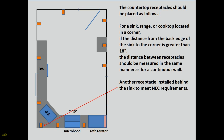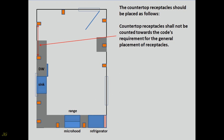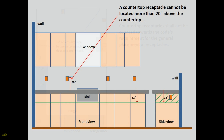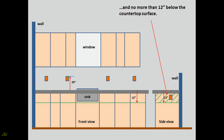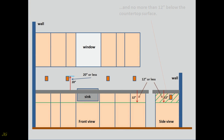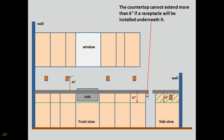Another receptacle may be installed behind the sink to meet NEC requirements. Countertop receptacles shall not be counted towards the code's requirement for the general placement of receptacles. A countertop receptacle cannot be located more than 20 inches above the countertop surface, and no more than 12 inches below the countertop surface. The countertop cannot extend more than 6 inches if a receptacle will be installed underneath it.